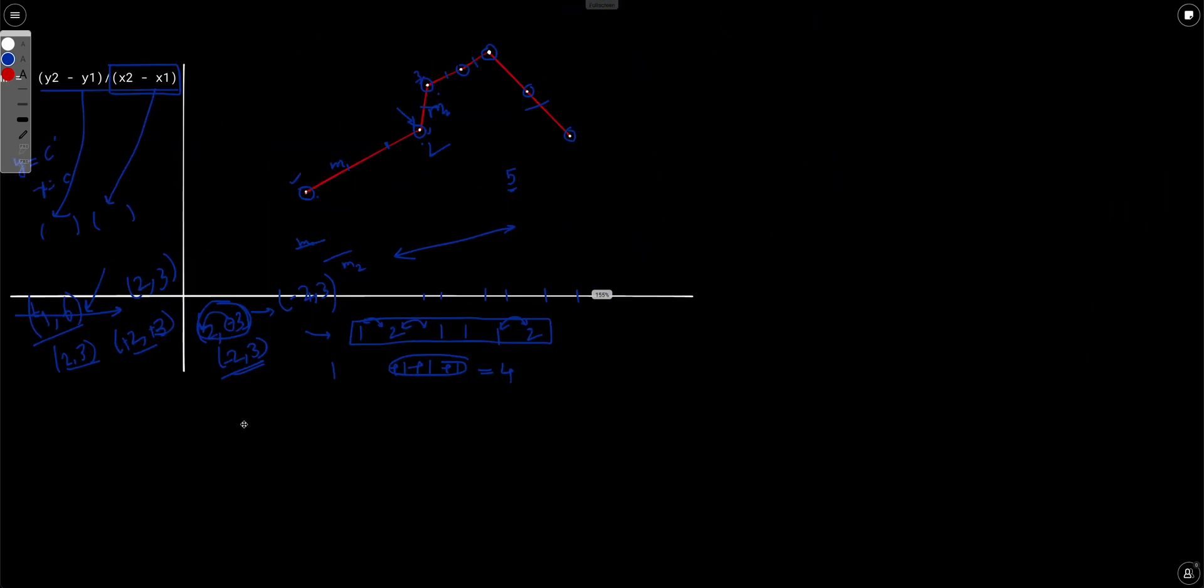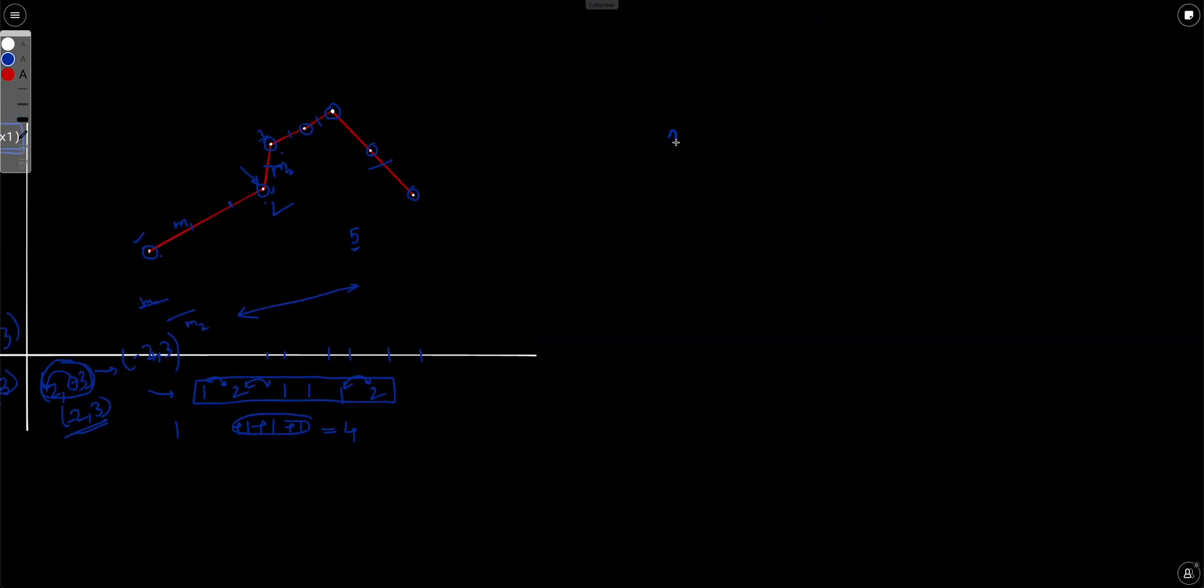So what we have done is we have done two things. First, let's say we maintain the differences x, y. Let's say the GCD of x, y is g. So we will maintain x by g and y by g.